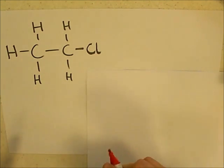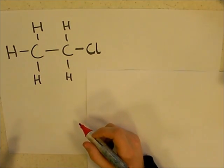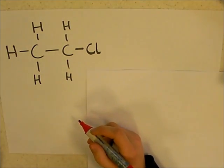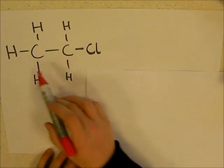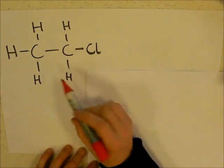What we're going to look at today is the nucleophilic substitution of ammonia onto a haloalkane. So what we're going to start with is a haloalkane like this, which is chloroethane.